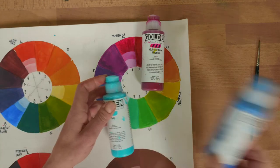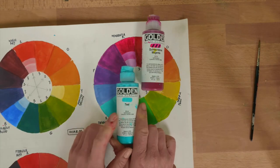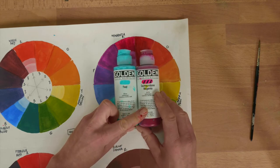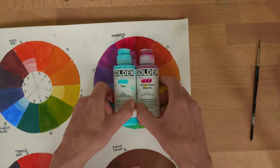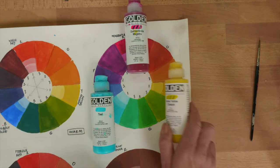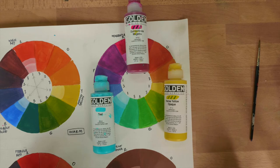So magenta and teal, or magenta and cyan, anything that resembles these sorts of colors. We'll stick with our yellow, and then I'll show you what those fantastic colors make.